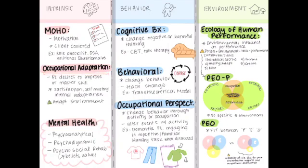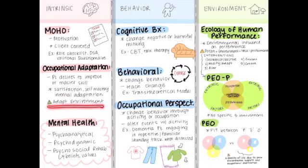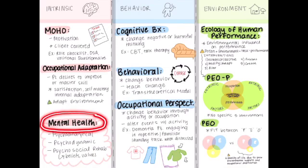Moving on to occupational adaptation. This model refers to a patient's desire to improve or master a skill as it relates to adaptation. I put this in intrinsic because some key takeaways are that there is internal satisfaction, self-mastery, as well as internal adaptation that can go on in this model. It's also worth noting that this model has an environmental component, so it doesn't perfectly fit into this category — I put a little green caution sign just to remind you that you can very well add up things within the environment.